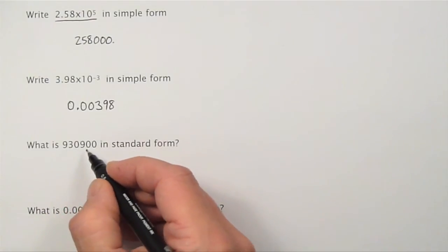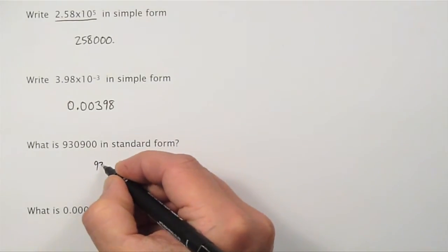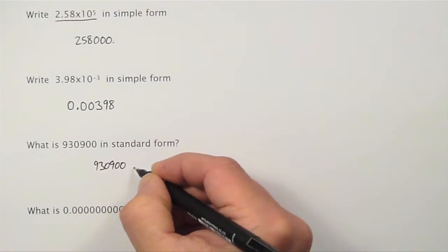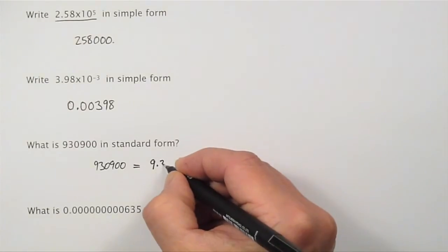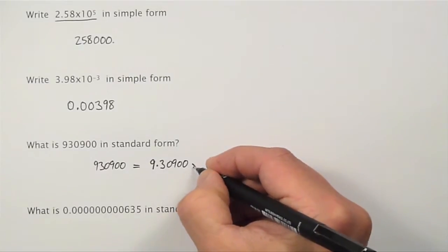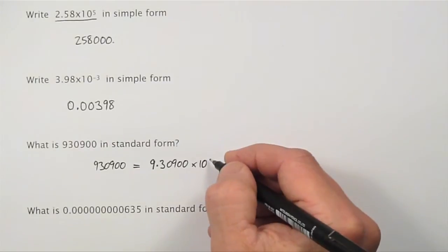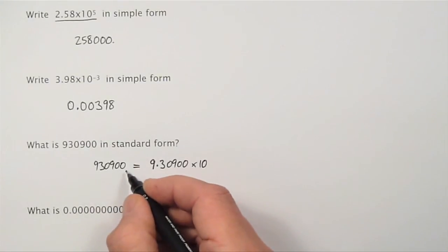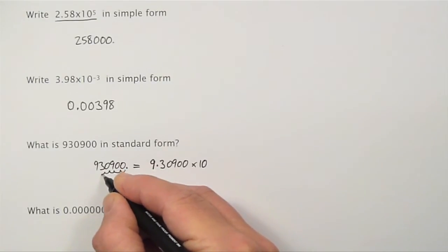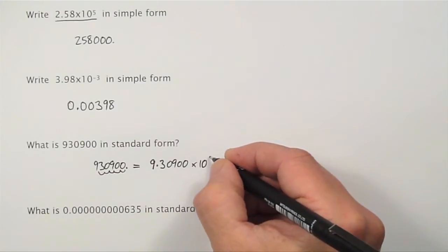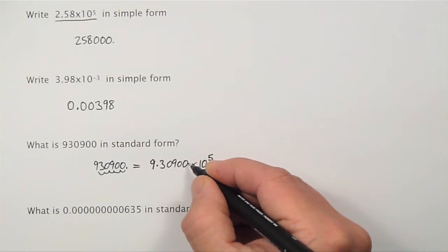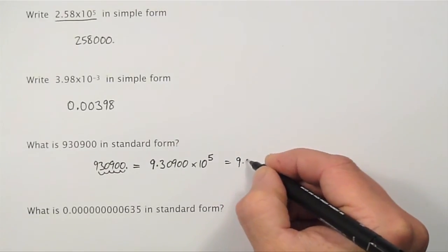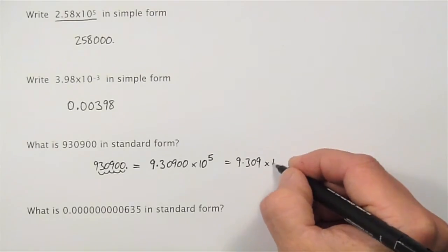What is 930900 in standard form? I'll need to write it as the first number, 9, followed by a decimal point: 3, 0, 9, 0, 0, multiplied by 10 to some power. We need to see how far we've moved the decimal point. Where was the decimal point in this original number? It was here. So I've moved it 1, 2, 3, 4, 5 places to the left, so that is times 10 to the power of 5. Now, you can see with this number, I could ignore those two zeros. So I can write it as 9.309 times 10 to the power of 5.